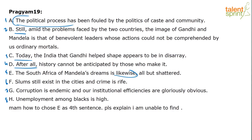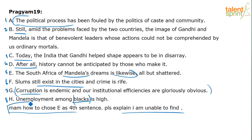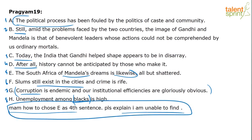Yes, if this question comes in the exam, the tendency is to skip it because just looking at these eight sentences we lose it. But since Pragyam has put it down, let's go ahead and see if we can figure this out. It's a problem-solving session, so let's solve the problem. Slums still exist in the cities — what cities are they referring to? Corruption is endemic and institutional inefficiency is gloriously obvious. This is giving us more information. Unemployment among blacks is high. Because we have Mandela, we're referring to Africans here.